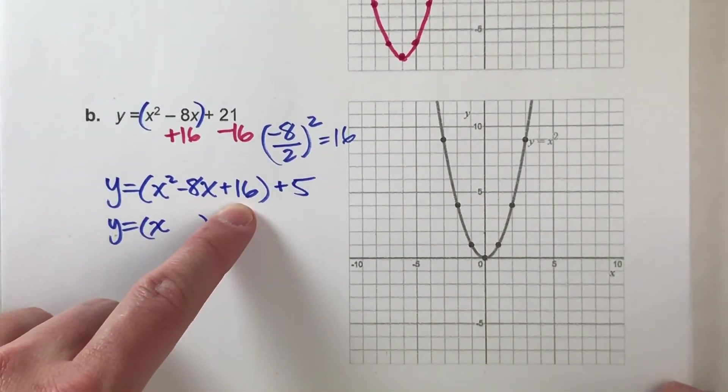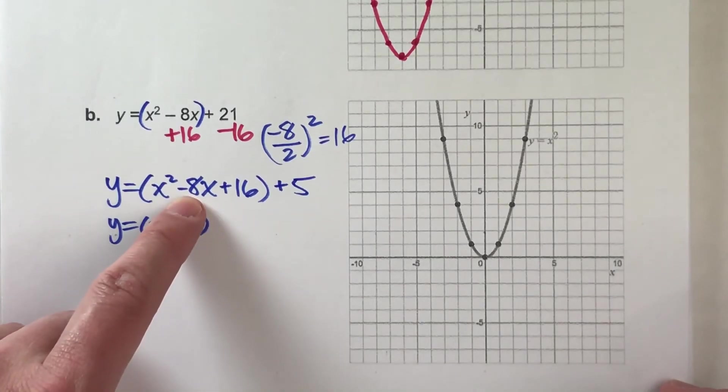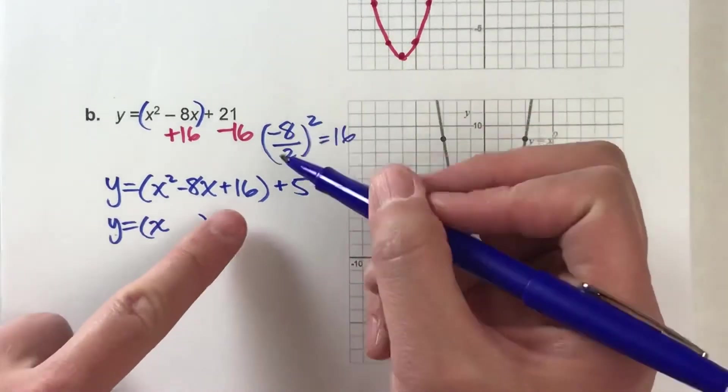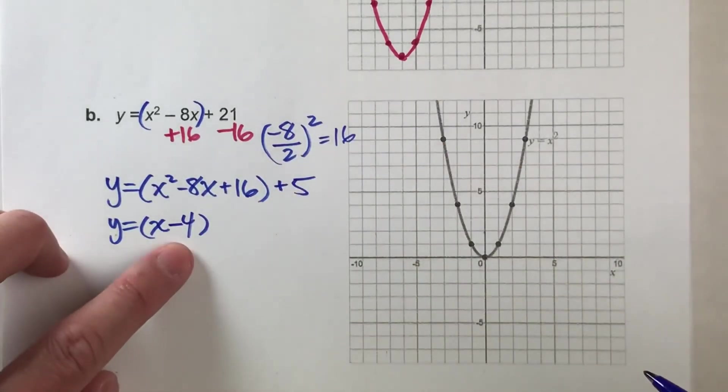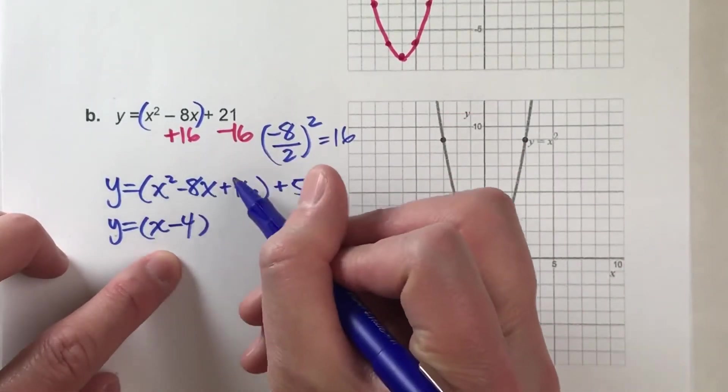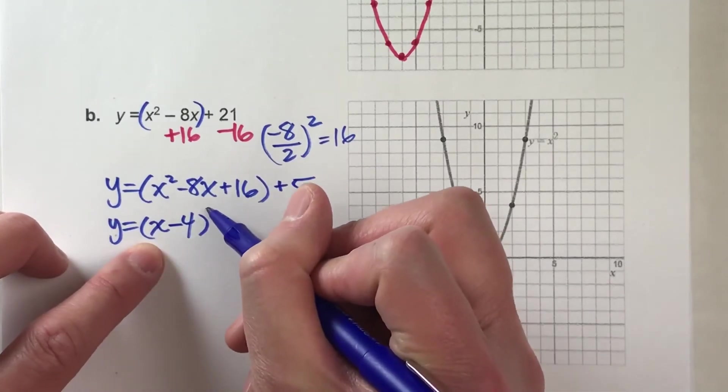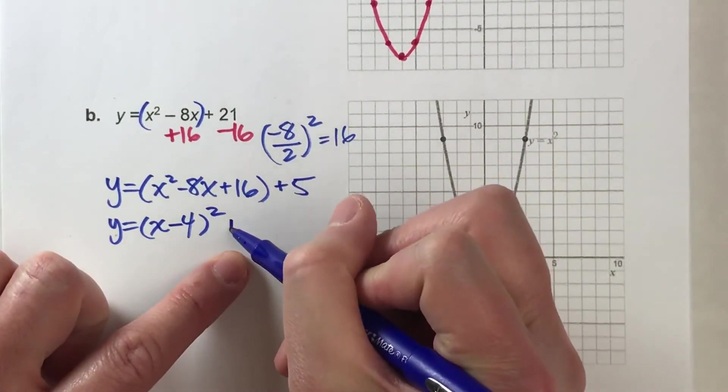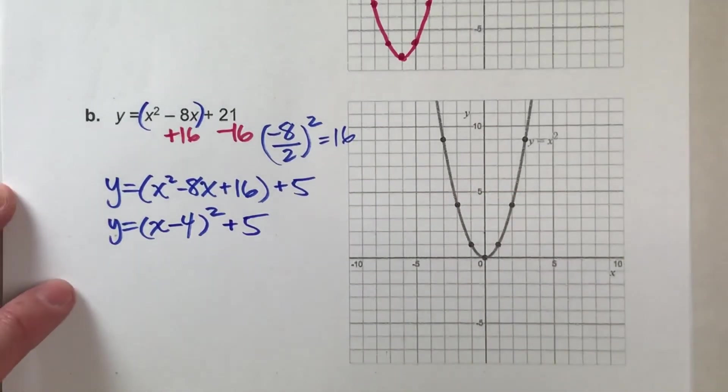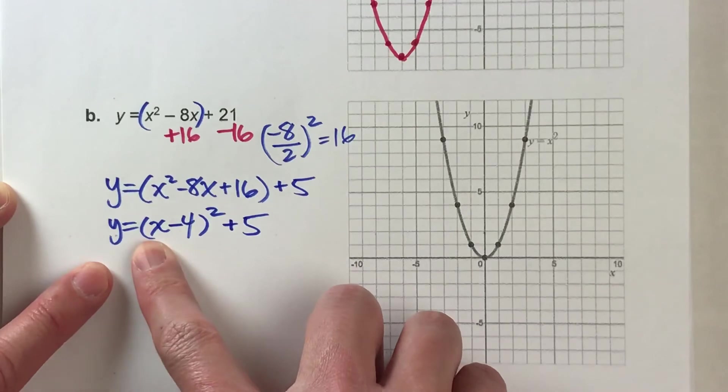So since this divided by 2 is negative 4, we're going to use the negative version of the square root. It's got to be minus 4. So this perfect square would be x minus 4 squared. And then I'll drop down my 5, plus 5. And look what we have. We are done. We can graph this now.